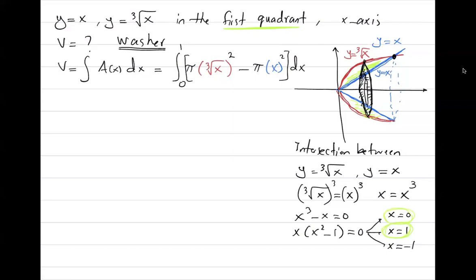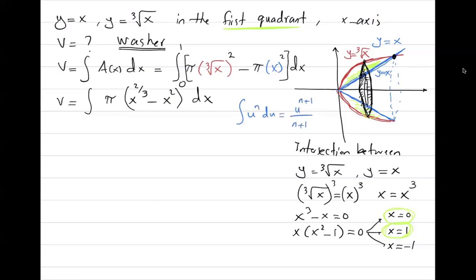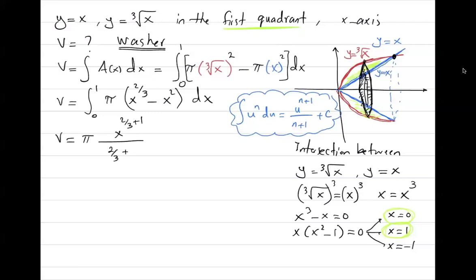So the definite integral runs from 0 to 1. The volume is π times the integral of (x^(2/3) − x²) dx. Using the power rule, the antiderivative is x^(2/3 + 1) divided by (2/3 + 1) minus x³ divided by 3, evaluated between 0 and 1.